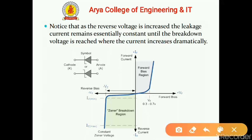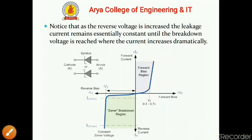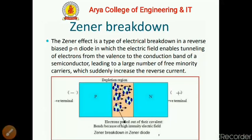In the forward biased region, it is very similar to a normal diode — 0.3 to 0.7 volts is the barrier potential which is required to start conduction.